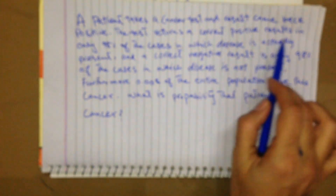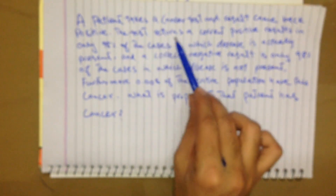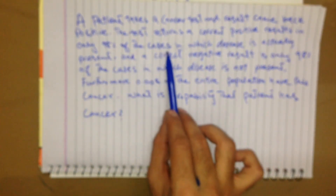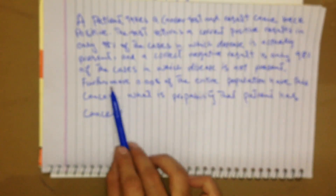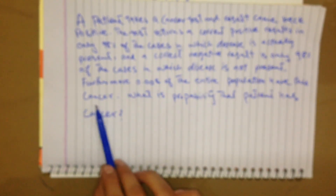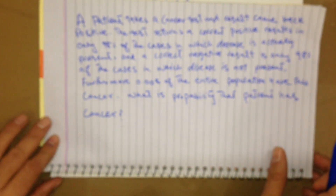Now we are going to solve a problem using Bayes theorem. A patient takes a cancer test and the result came back positive. The test returns a correct positive result in 98% of cases in which the disease is actually present, and a correct negative result in 98% of cases in which the disease is not present. Furthermore, 0.008 of the entire population has this cancer. What is the probability that the patient has cancer?